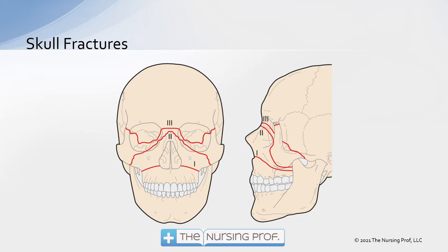Now those bones in the front — one of the reasons I showed you this picture here — those facial bones are going to be more likely to fracture. They're thinner and smaller, so they're more likely to fracture than would be maybe the top of the skull.